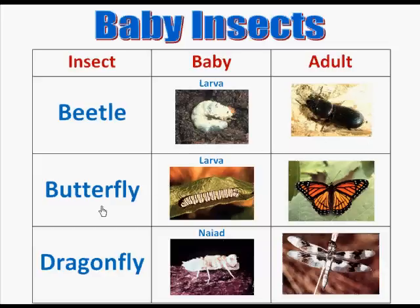Then we have a butterfly. Here you can see an adult butterfly, and their baby is called larva.